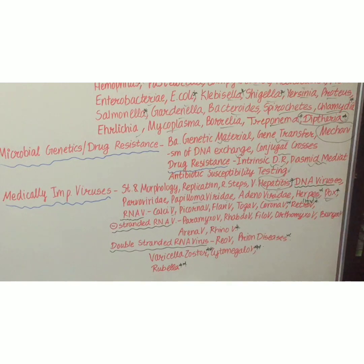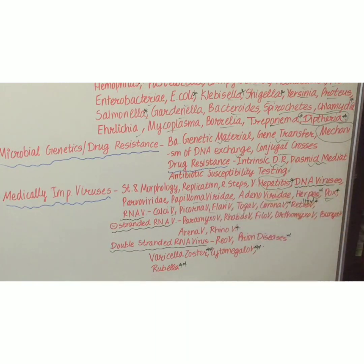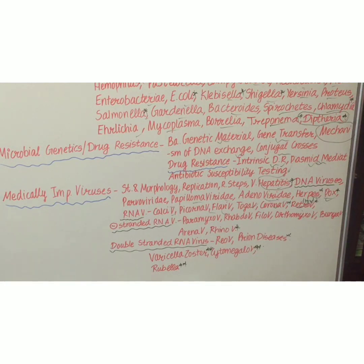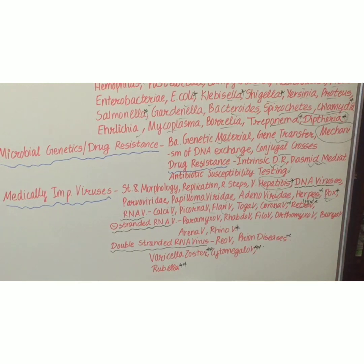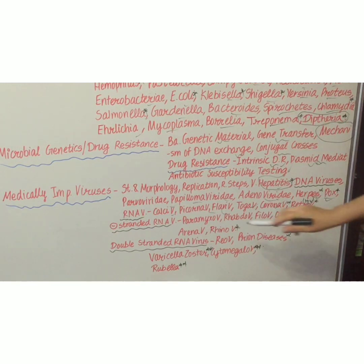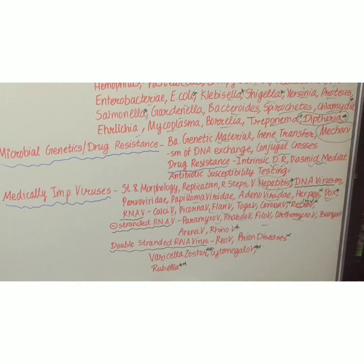RNA viruses include Calicivirus, Picornavirus, Flavivirus, Togavirus, Coronavirus, and Retrovirus — Retrovirus causes HIV, which is why Coronavirus and Retrovirus are very important. Negative-stranded RNA viruses include Paramyxovirus, Rhabdovirus, Filovirus, and Orthomyxovirus.